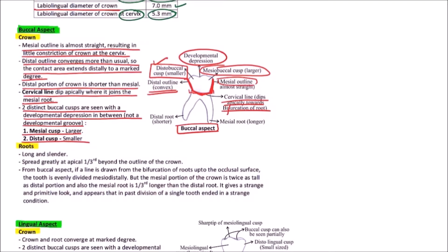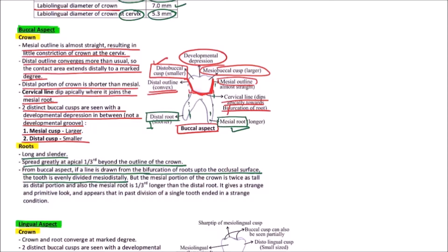The roots are long and slender. There are two roots: the distal root and the mesial root. The mesial root is longer and the distal root is shorter. They spread greatly at the apical third and beyond the outline of the crown. The distal root especially extends beyond the crown outline from the buccal aspect. If a line is drawn from the bifurcation of the roots to the occlusal surface, the tooth is evenly divided mesiodistally, but the mesial portion of the crown is twice as tall as the distal portion, and the mesial root is one third longer than the distal root.